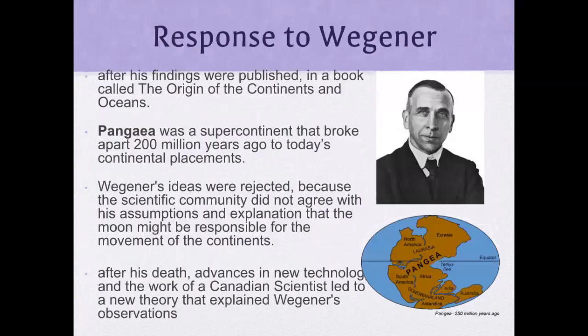These were the responses to Wegener after his findings were published in a book called 'The Origins of the Continents and Oceans.' Pangaea was a supercontinent that broke apart 200 million years ago to form today's continental positions. Unfortunately, Wegener's ideas were rejected because the scientific community did not agree with his assumption that the moon might be responsible for the movement of the continents.